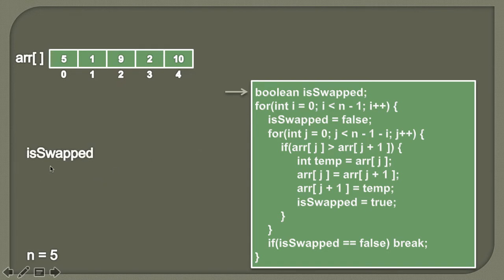There are two for loops: one is the outer for loop and the other is the inner for loop. The outer for loop keeps track of each iteration, and the inner for loop helps us perform the comparison of adjacent elements. The outer for loop starts with i equal to zero and loops while i is less than n minus one — so five minus one gives four, meaning the loop runs four times: 0, 1, 2, 3, for a total of four iterations.